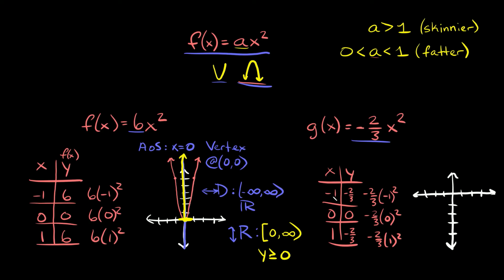Our first point is at negative 1, negative 2/3 — so about here. Then we're at 0, 0, and then at 1, negative 2/3. We connect the dots and there's our parabola. We were expecting it to point down and to be kind of fat, and that definitely checks out.